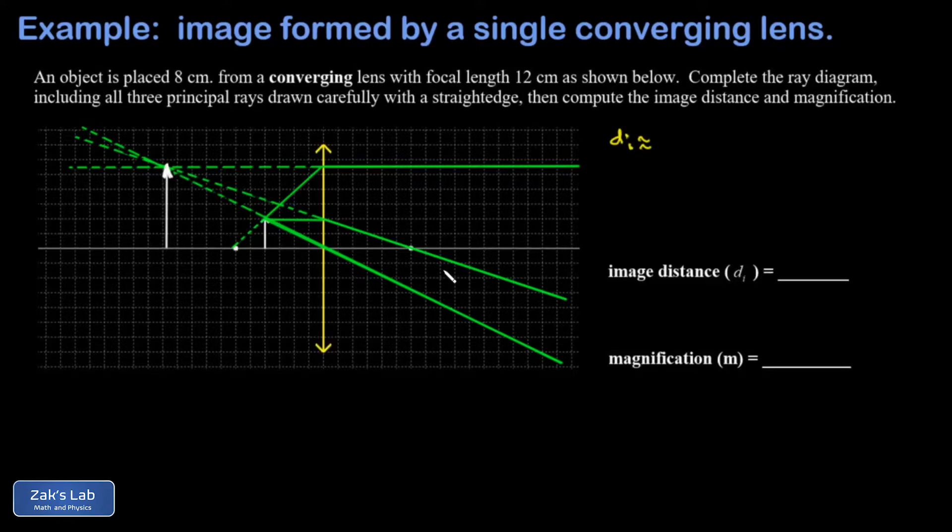So now we can use our diagram to approximate the image distance and the magnification. Notice that we were told the object was 8 centimeters from the lens, and the focus was 12 centimeters from the lens. That means every grid space that we see in this picture is 2 centimeters.